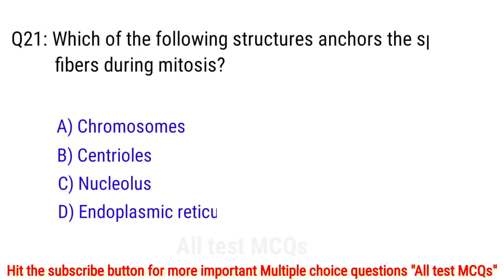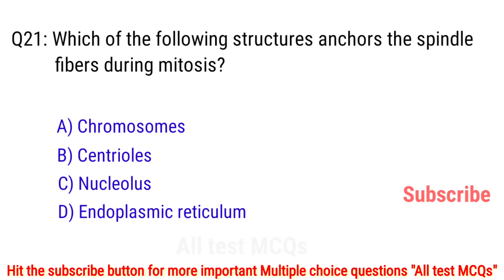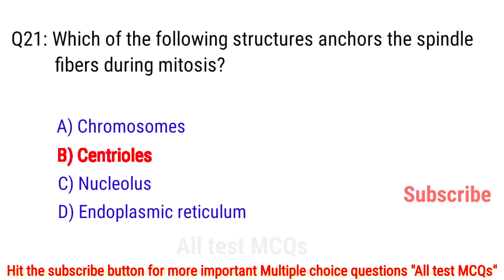Question number 21. Which of the following structures organizes the spindle fibers during mitosis? The right answer is option B: centrioles.